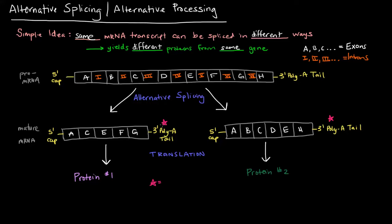One thing I want to note: I have these little pink stars above the 3' poly-A tails to note that they have different poly-A sites. Notice this one is attached at the G and this one is attached at the H. There might be multiple poly-A sites, and that's what allows for alternative processing to happen, because you need to have these 3' poly-A tails attached.